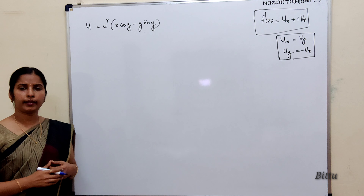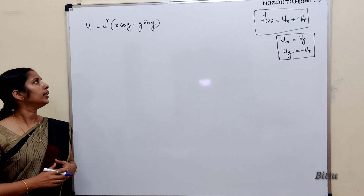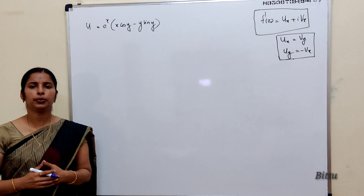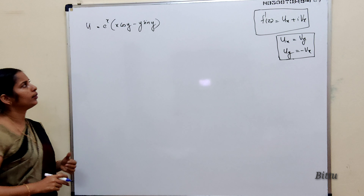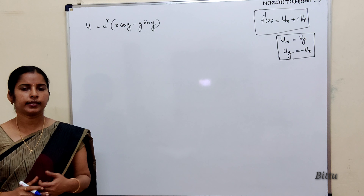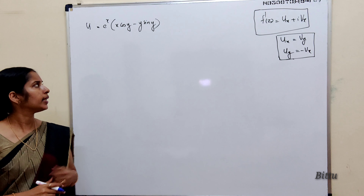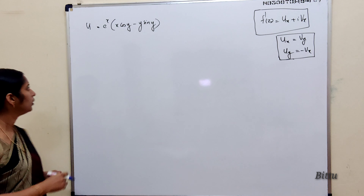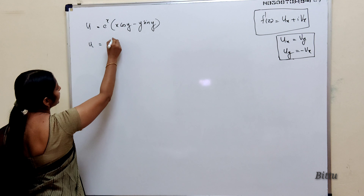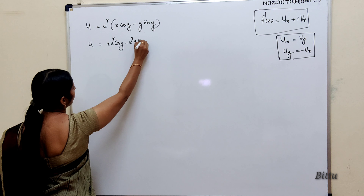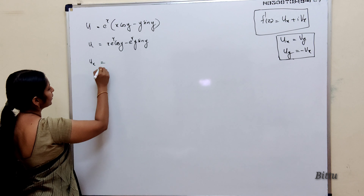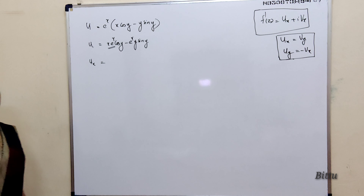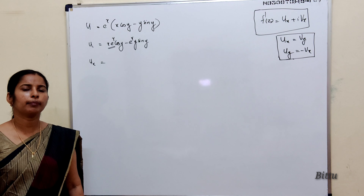Next question: find an analytic function whose real part is e^x(x·cos(y) − y·sin(y)). This is an important examination question. For convenience of partial differentiation, open the bracket: u = x·e^x·cos(y) − e^x·y·sin(y). We find ∂u/∂x. In the first term, x·e^x is a product with cos(y) as a constant, so apply the product rule.